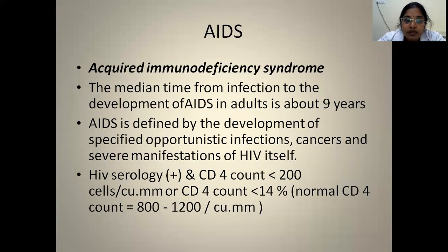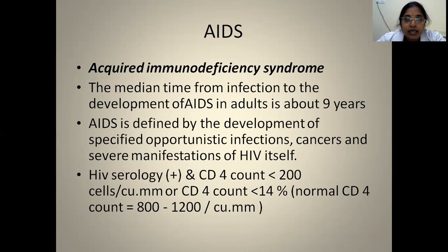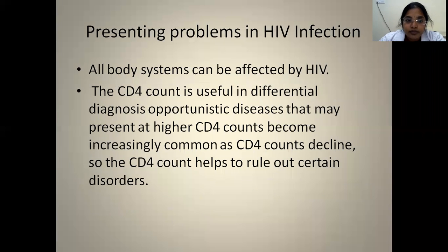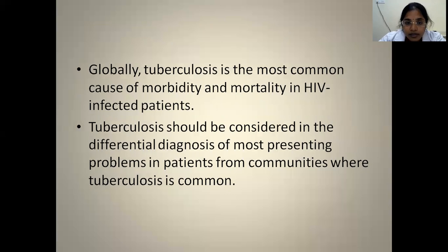After a median period of about nine years from infection, patients develop full-blown AIDS — acquired immunodeficiency syndrome. AIDS is defined by the development of specified opportunistic infections, cancers, and severe manifestations of the virus itself. CD4 count drops below 200; normal CD4 count is 800 to 1200 cells per cubic millimeter. Almost all systems in the body can be affected by HIV, and by measuring the CD4 count we can arrive at certain differential diagnoses.